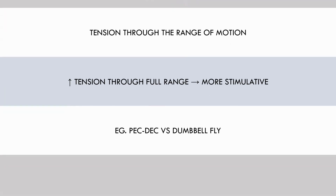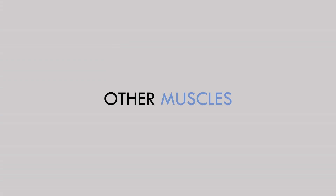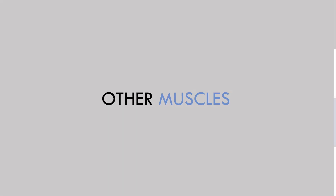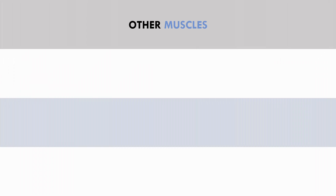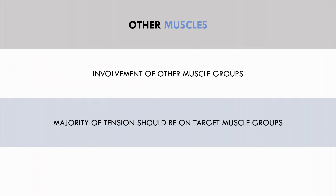The last factor that can make an exercise more or less stimulative is the involvement of other muscle groups. Involving other muscle groups isn't an issue, although we want the majority of tension to be placed on the target muscles, not other accessory muscles. For example, a high bar back squat places the majority of tension on the quads, while a low bar back squat distributes more tension on the spinal erectors and glutes.